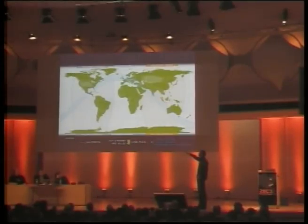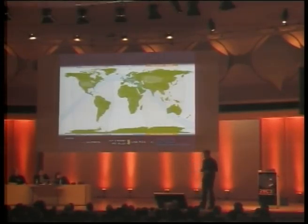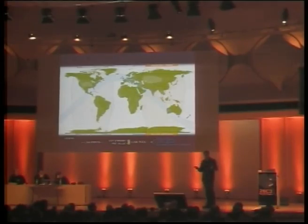We want to communicate with the moon. To communicate with the moon you need a relatively large antenna, at least 15 meters in diameter. But you only have 90 centimeters in diameter. How can you do this?